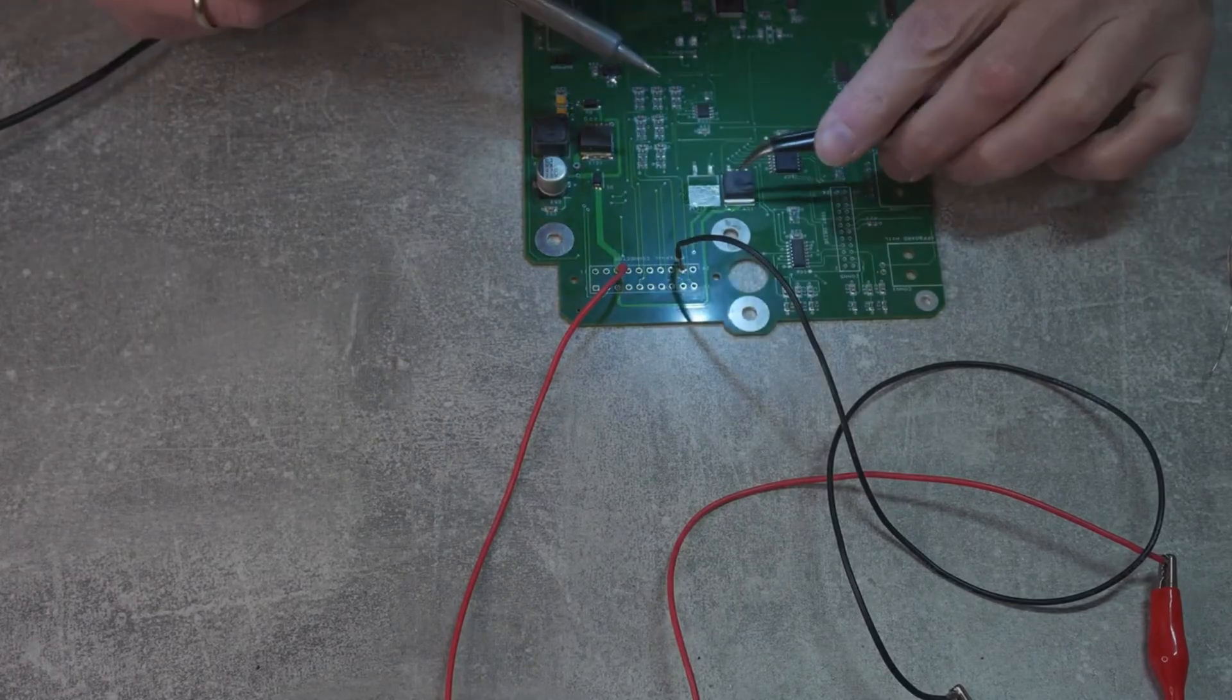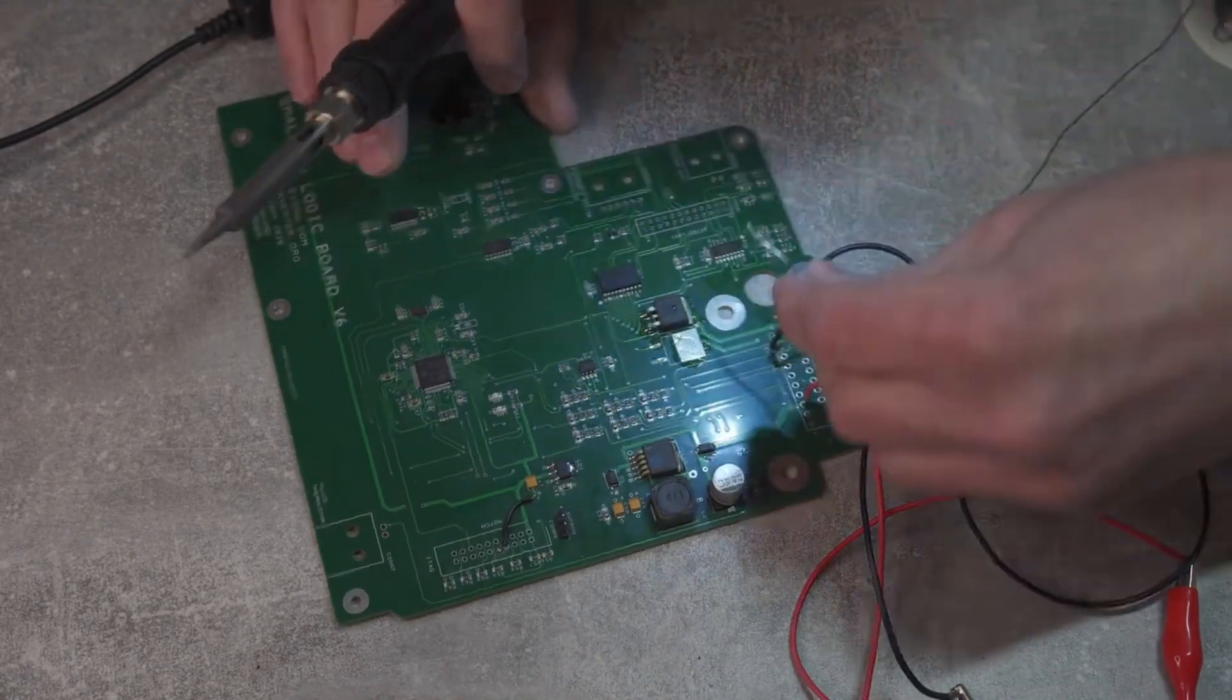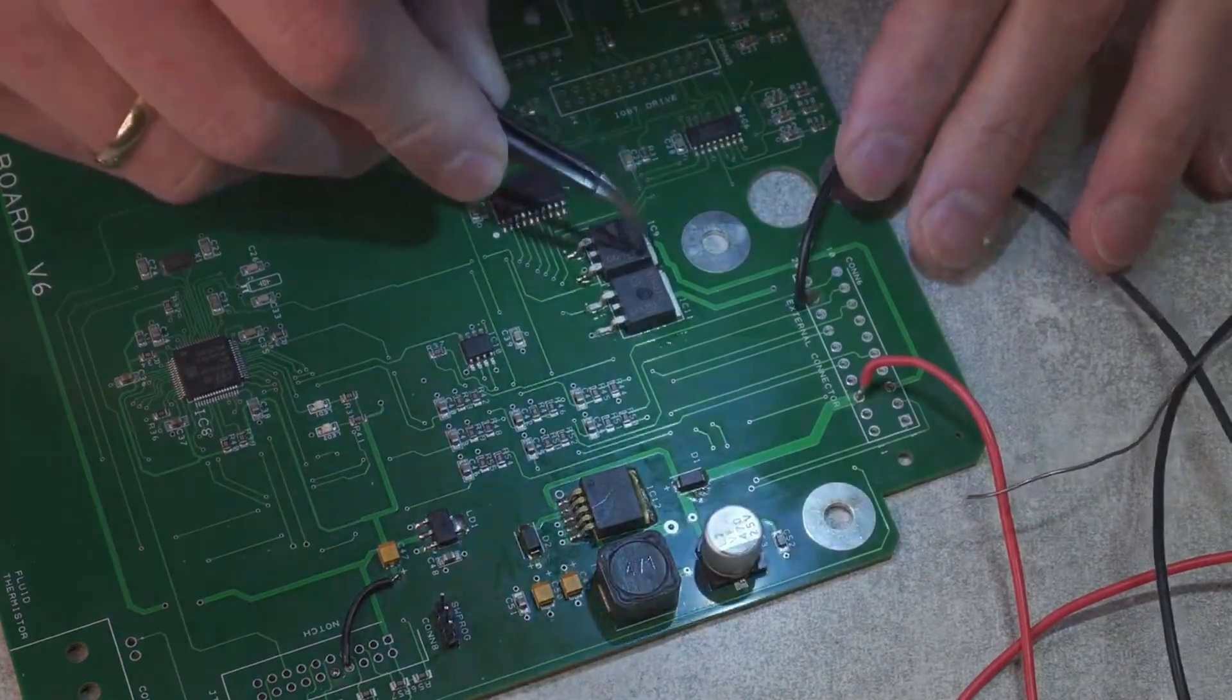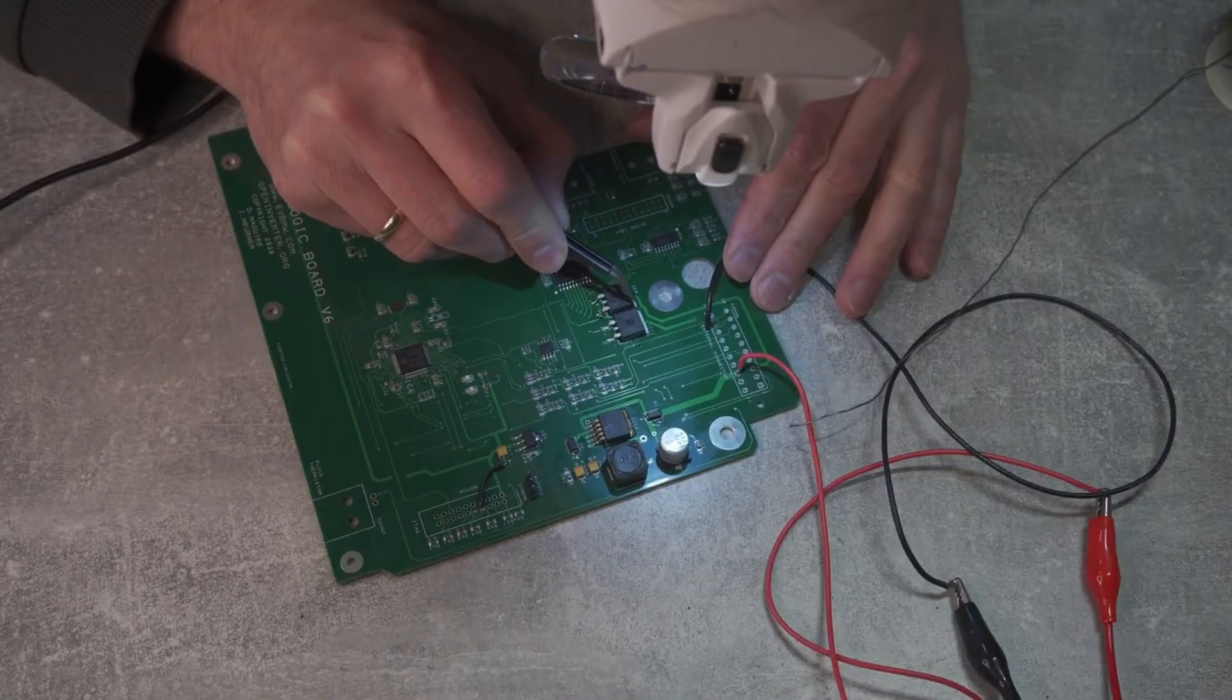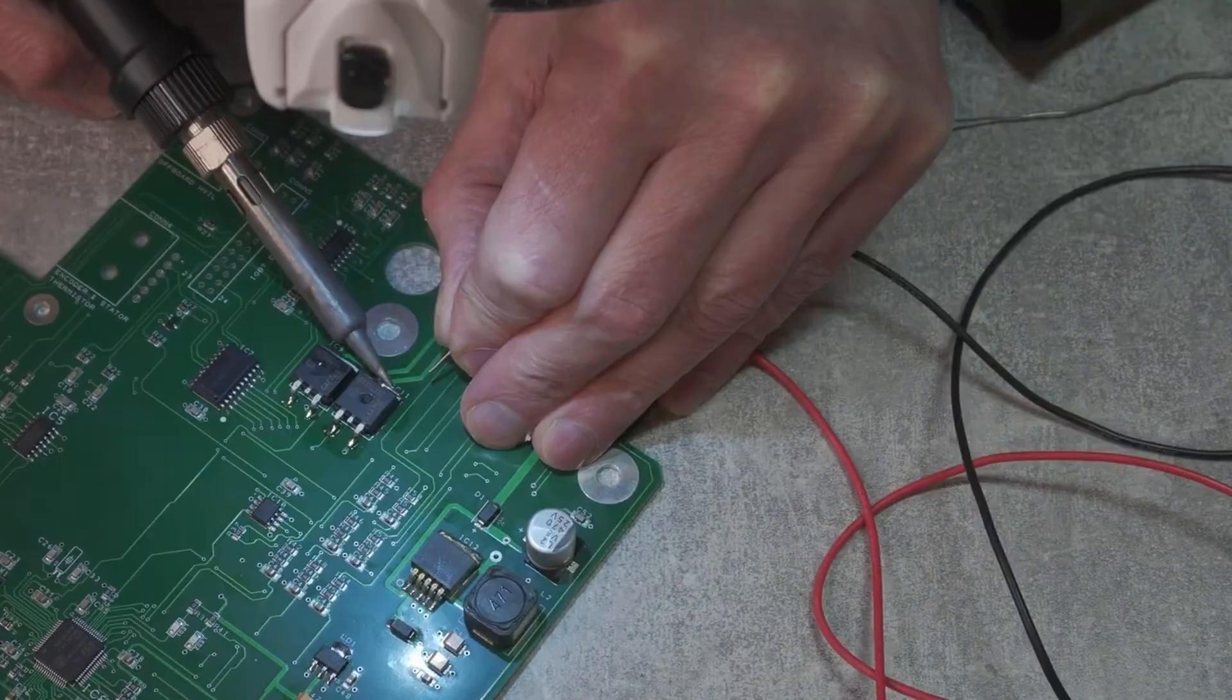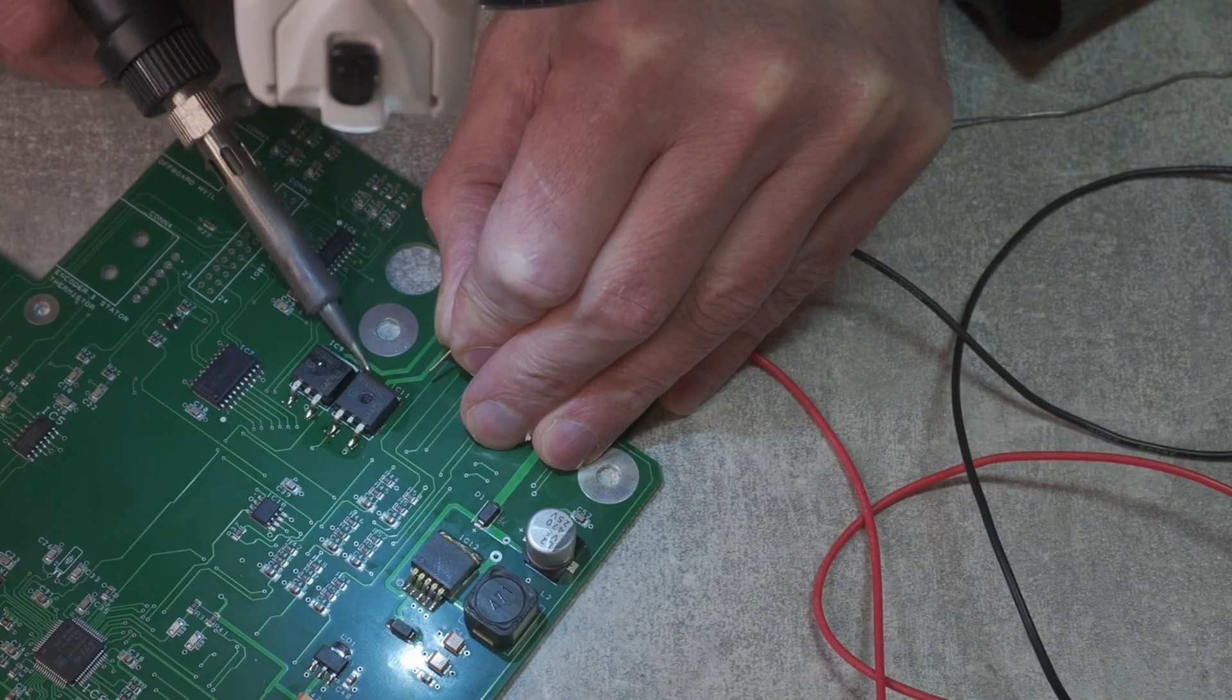Once I programmed the board and I could see that it was working I could finish off by adding missing components. Soldering FETs is a bit more challenging. As they have rather large heat sinks I had to cover the pad and FET backside with flux and heat the pad for much longer to ensure that solder properly had flown into the pad.